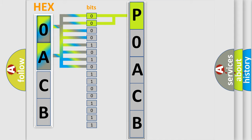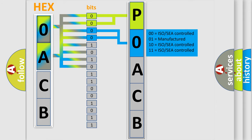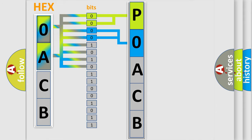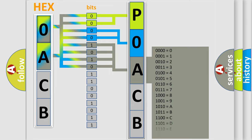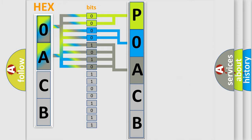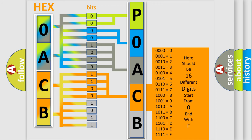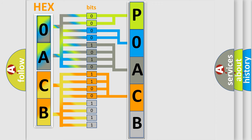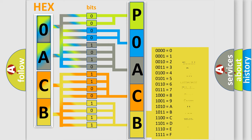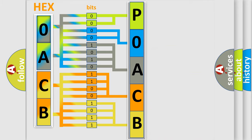The next two bits again determine the second character. The last bits of the first byte define the third character of the code. The second byte is composed of a combination of eight bits. The first four bits determine the fourth character of the code, and the combination of the last four bits defines the fifth character. A single byte conceals 256 possible combinations.